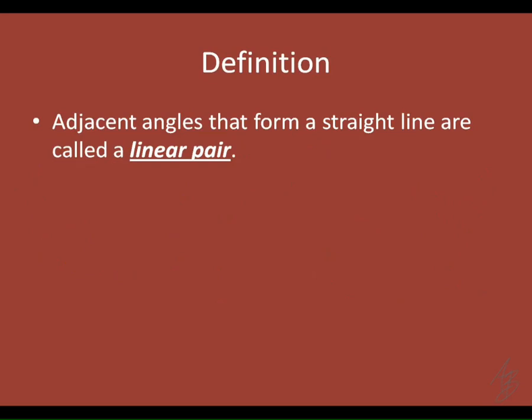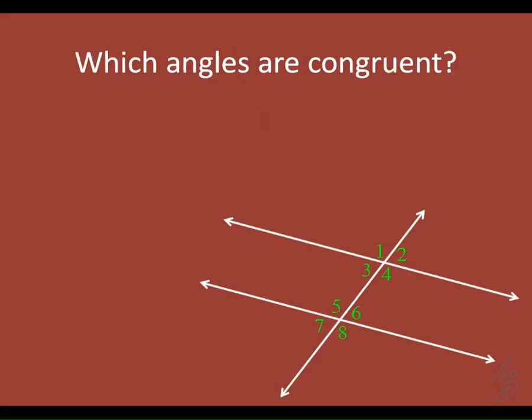Adjacent angles that form a straight line are called a linear pair. We saw a linear pair in the opener, where two angles came together to form a straight line. So we've now added linear pair and vertical angles to the five angle relationships we discussed yesterday, giving us seven total.